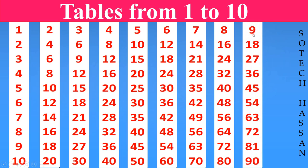9th table. 9 1s are 9. 9 2s are 18. 9 3s are 27. 9 4s are 36. 9 5s are 45.